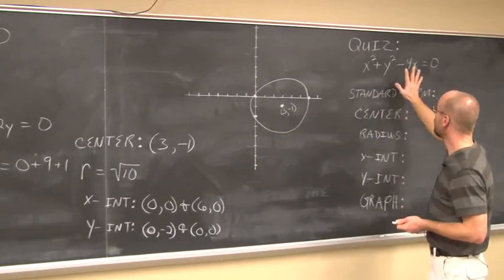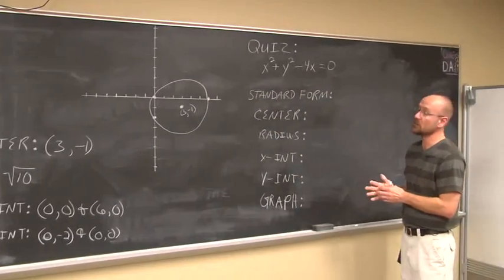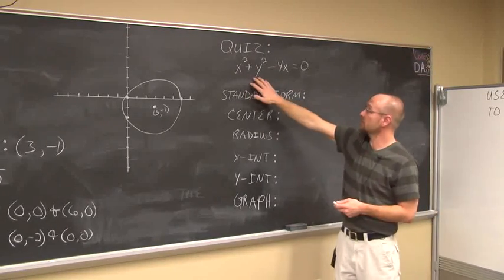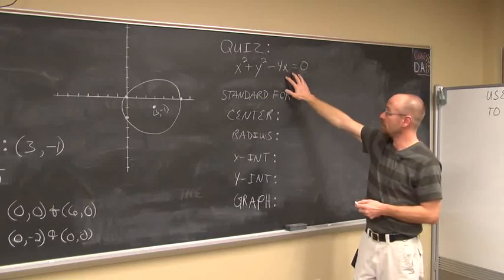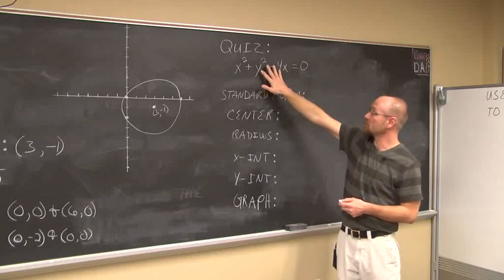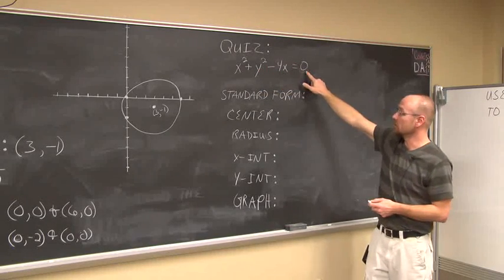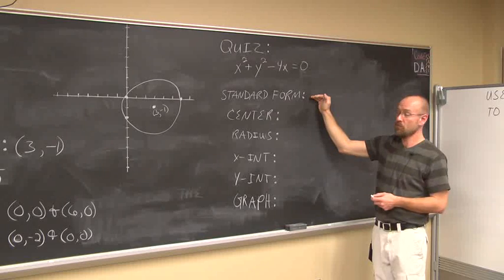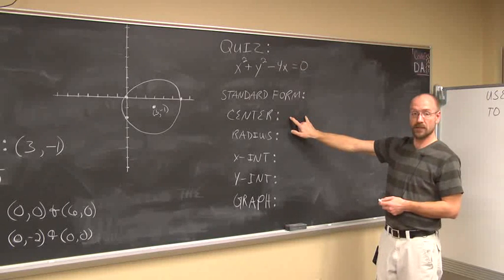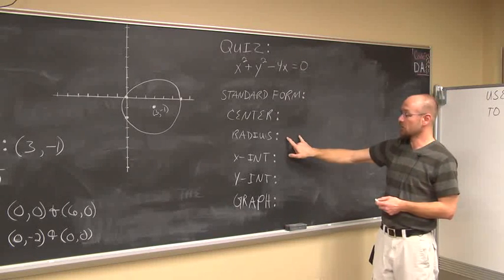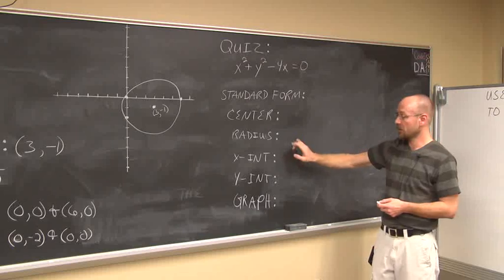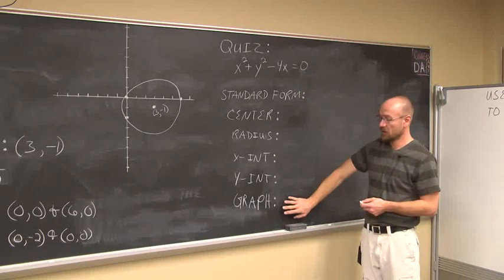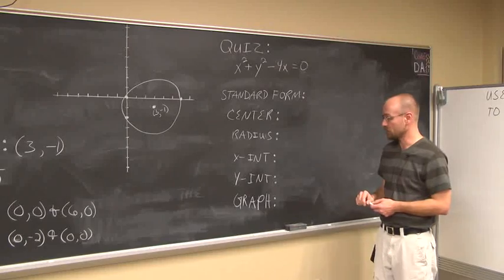Here is your quiz — try it for yourself. Given the equation in general form x squared plus y squared minus 4x equals 0, write this equation in standard form. Identify the center h and k, give the radius, find any x or y intercepts, and then use that information to graph the equation.